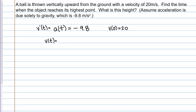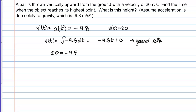V(T) is the integral of acceleration. Taking the antiderivative gives negative 9.8T plus C — because the derivative of negative 9.8T gives back negative 9.8, and plus any constant also yields the same derivative. This is the general solution. Using the initial condition V(0) = 20, I plug in and find that C equals 20. So the particular solution is V(T) = negative 9.8T plus 20.